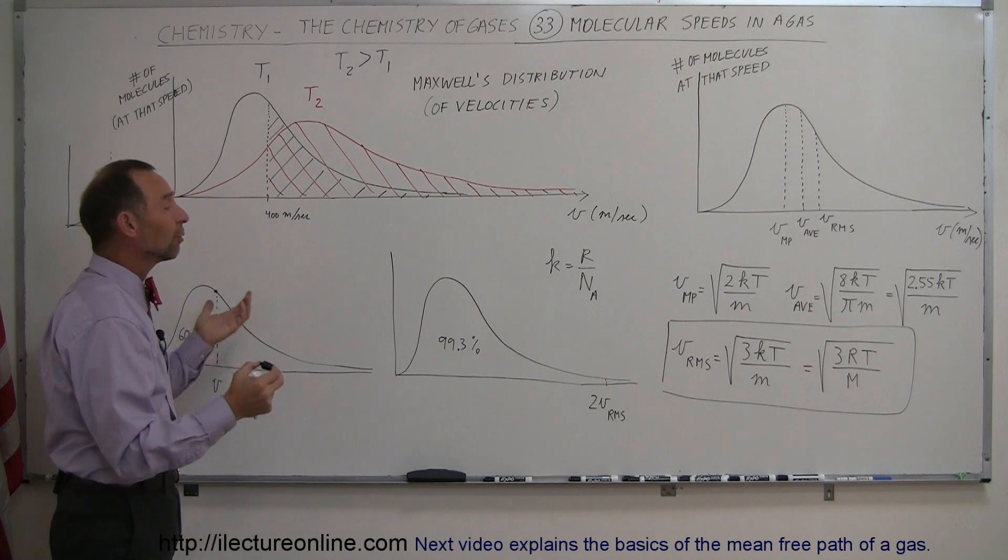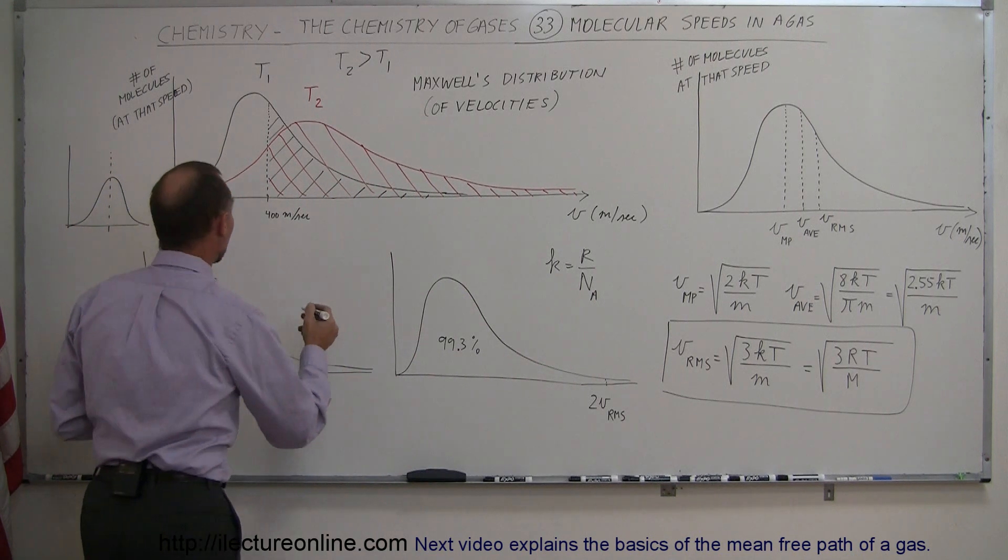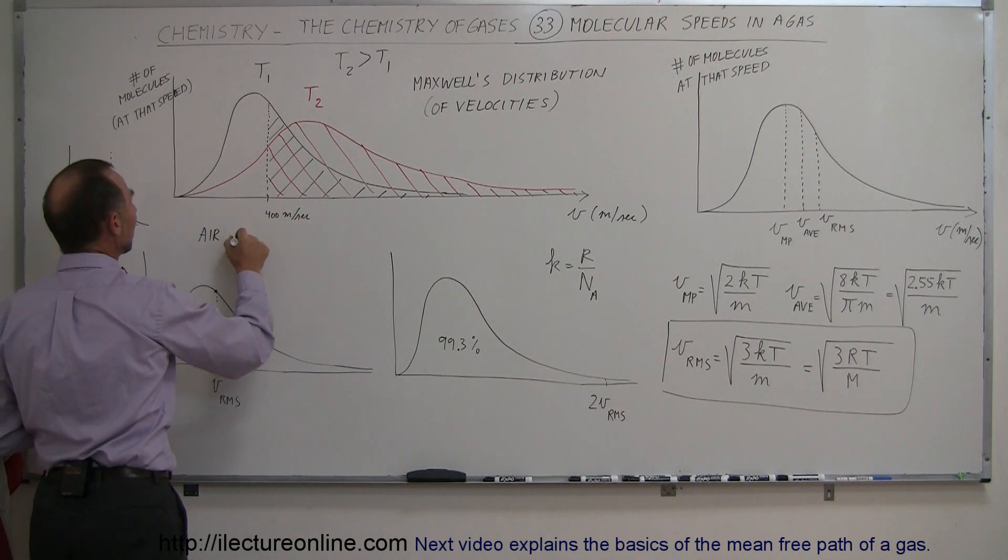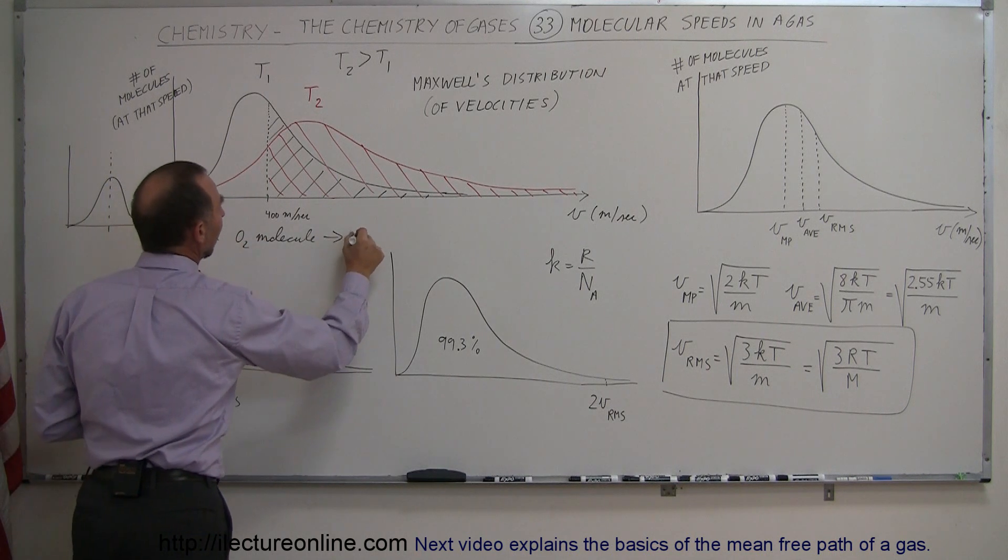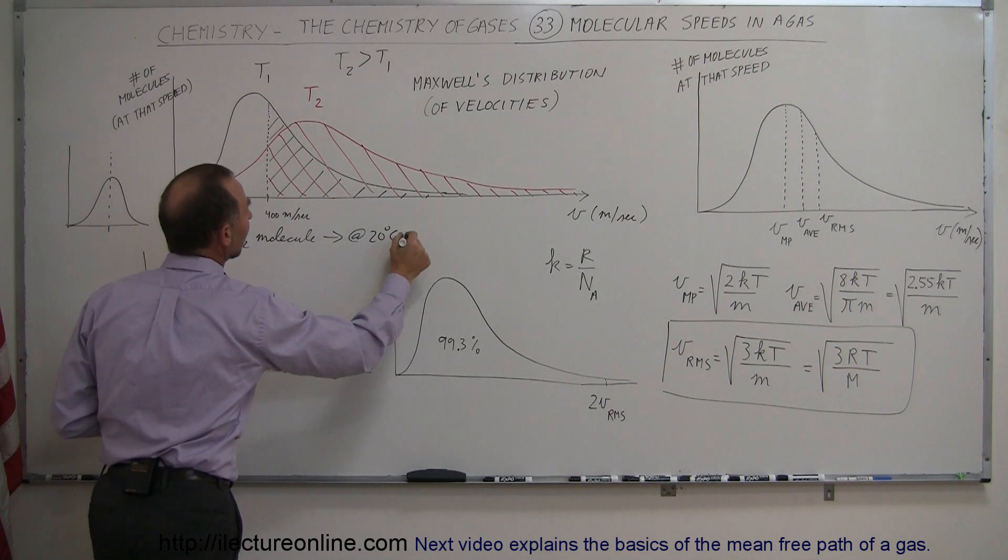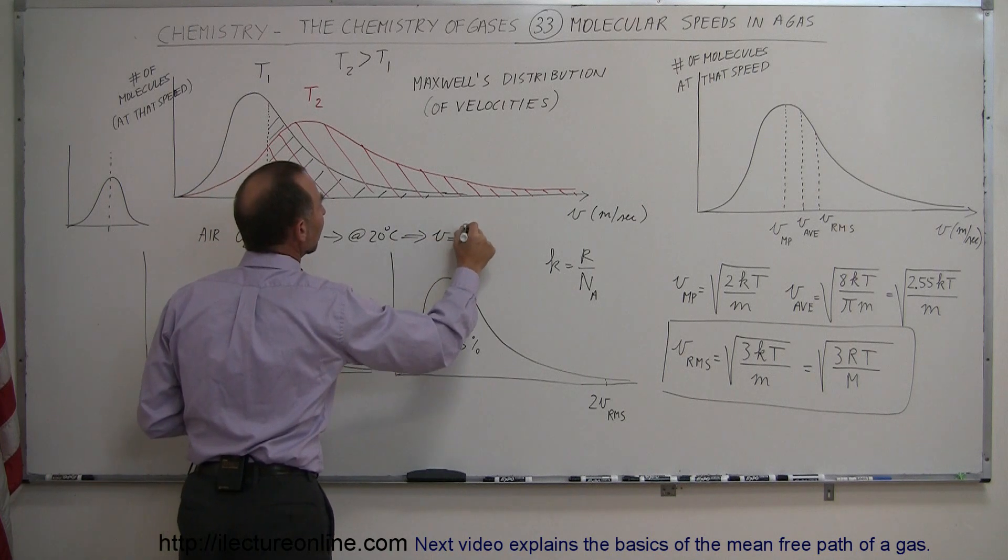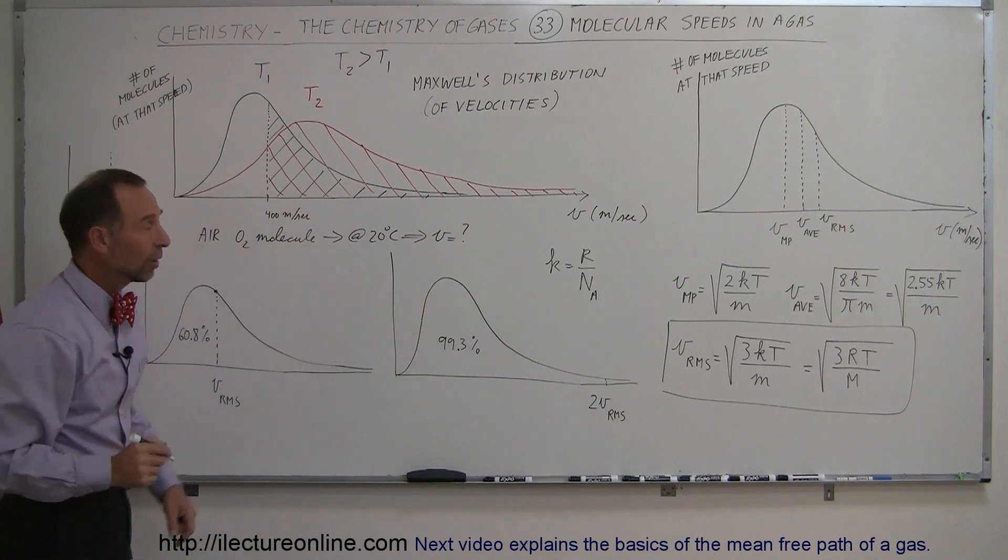If we want to do an example of what that RMS velocity is, for example, in air we have an oxygen molecule at 20 degrees Celsius and we want to know what is the velocity of that molecule. So we can use that equation right there.